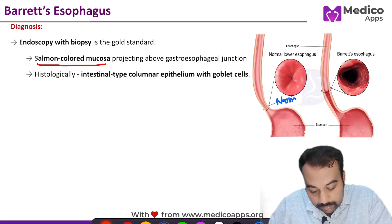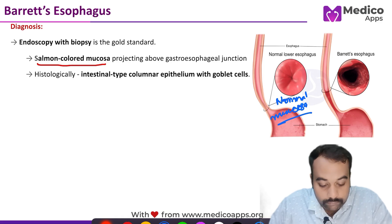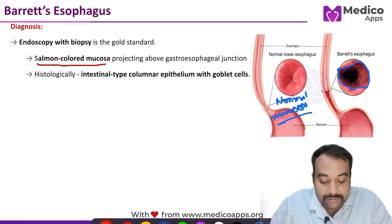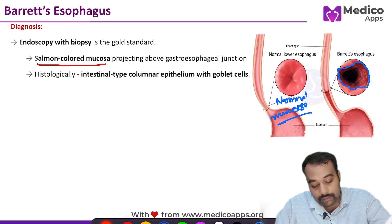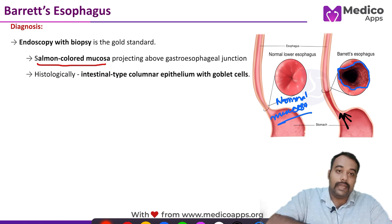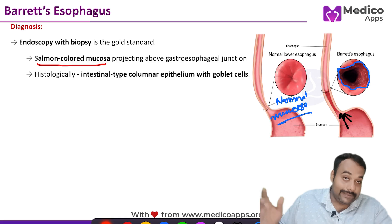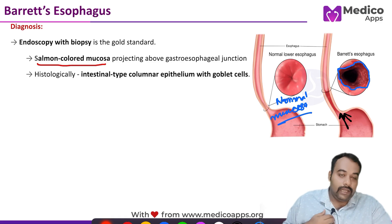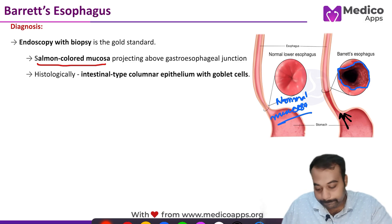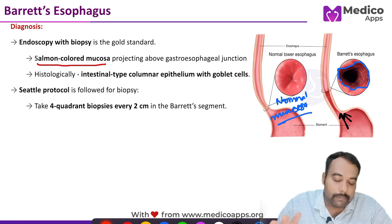In this image, you can see the normal mucosa versus the Barrett's esophagus — the Barrett's appears as a salmon-colored patch. This occurs because due to the reflux of gastric content into the lower esophagus, chronic exposure leads to this adaptive metaplasia.